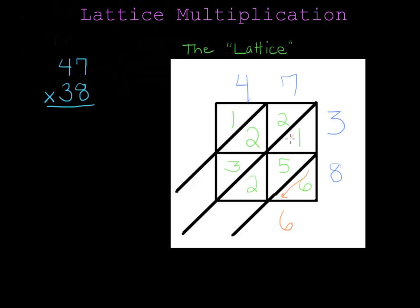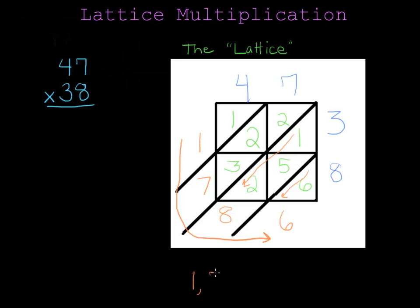In this diagonal, there are three numbers. One plus five is six, plus two more is eight. And in this diagonal, there are three numbers. Two plus two is four, plus three is seven. And in the last diagonal, there's just the one, so I bring that down. And I read my answer going around the corner of the lattice.